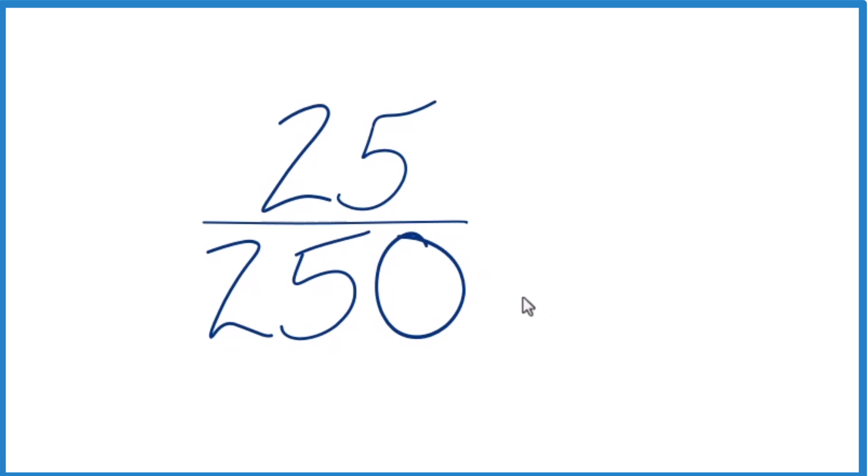And to do that, we need to find a common factor, something that goes evenly into 25 and 250. So it looks like for 25 and 250, it looks like 25 will go evenly into 250.